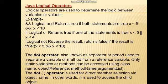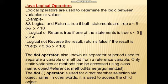The dot operator, also known as a separator or period, is used to separate a variable or method from a reference variable. Only static variables or methods can be accessed using the class name. The dot operator is used for direct member selection via object name — in other words, it is used to access child object classes.